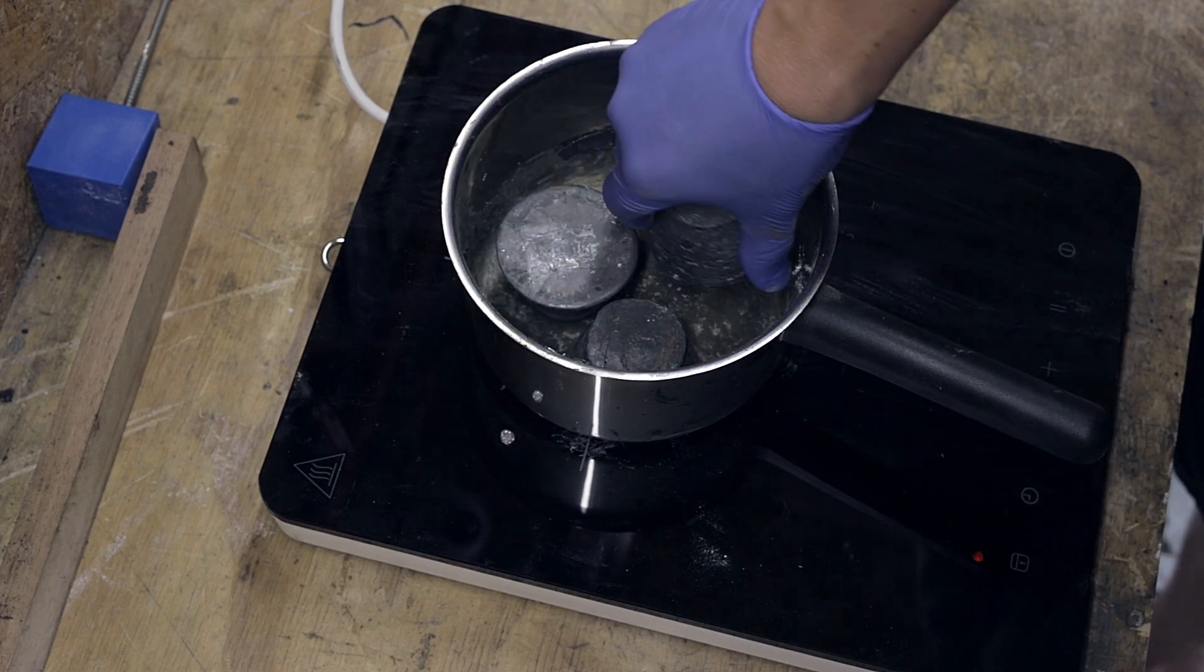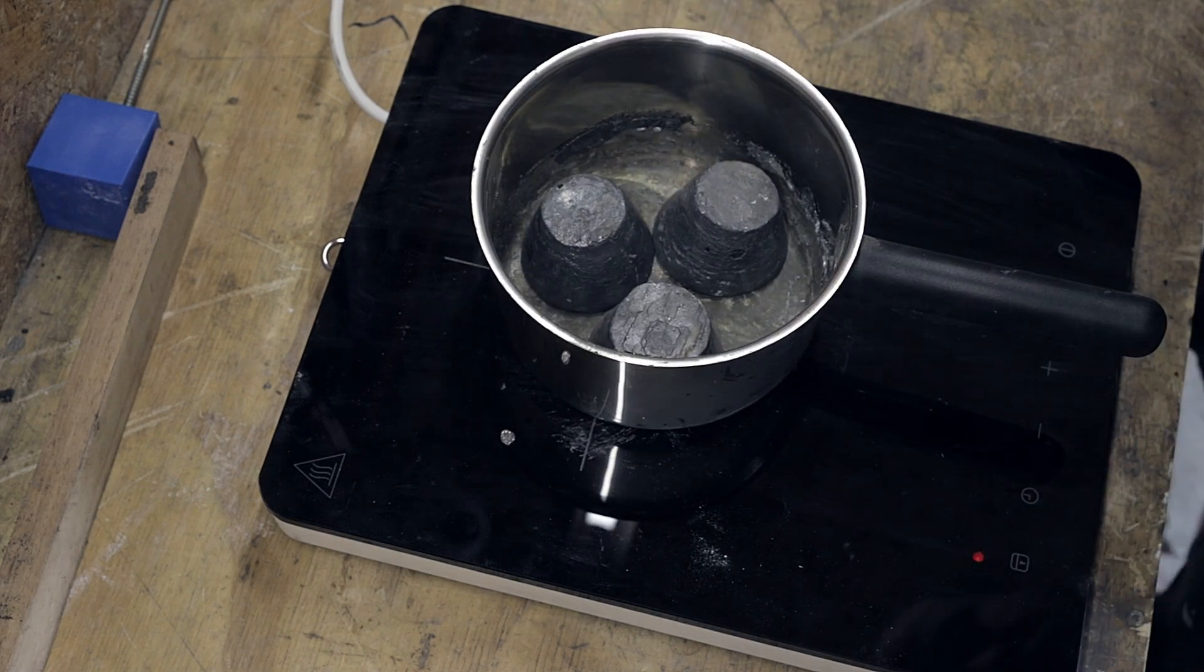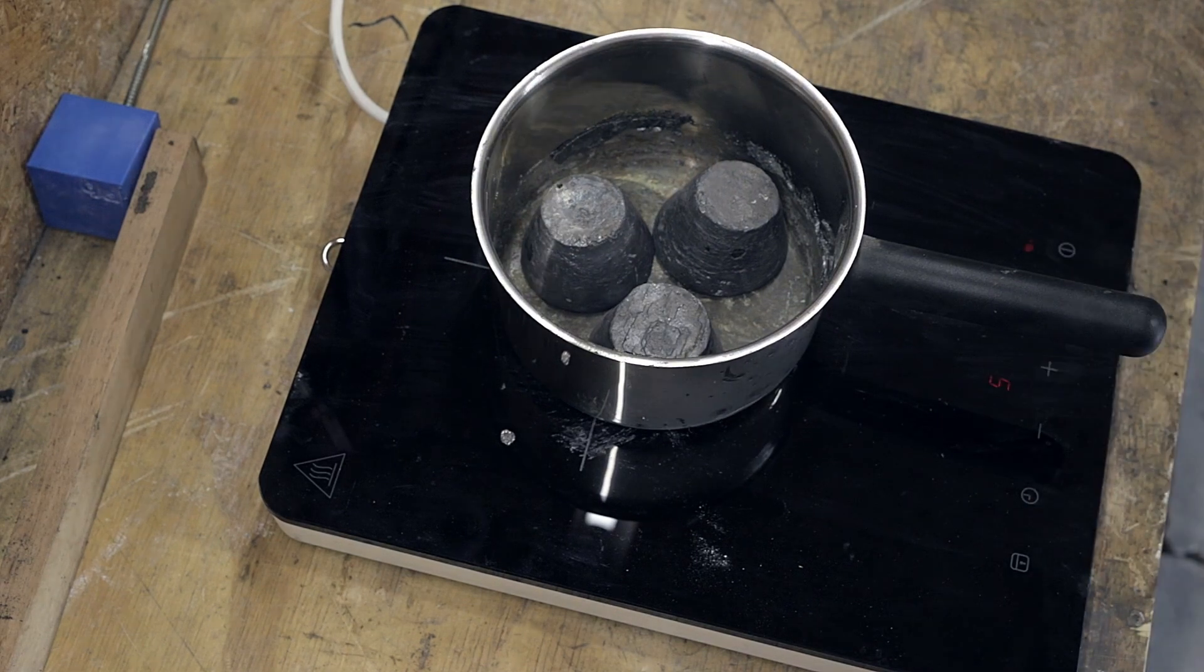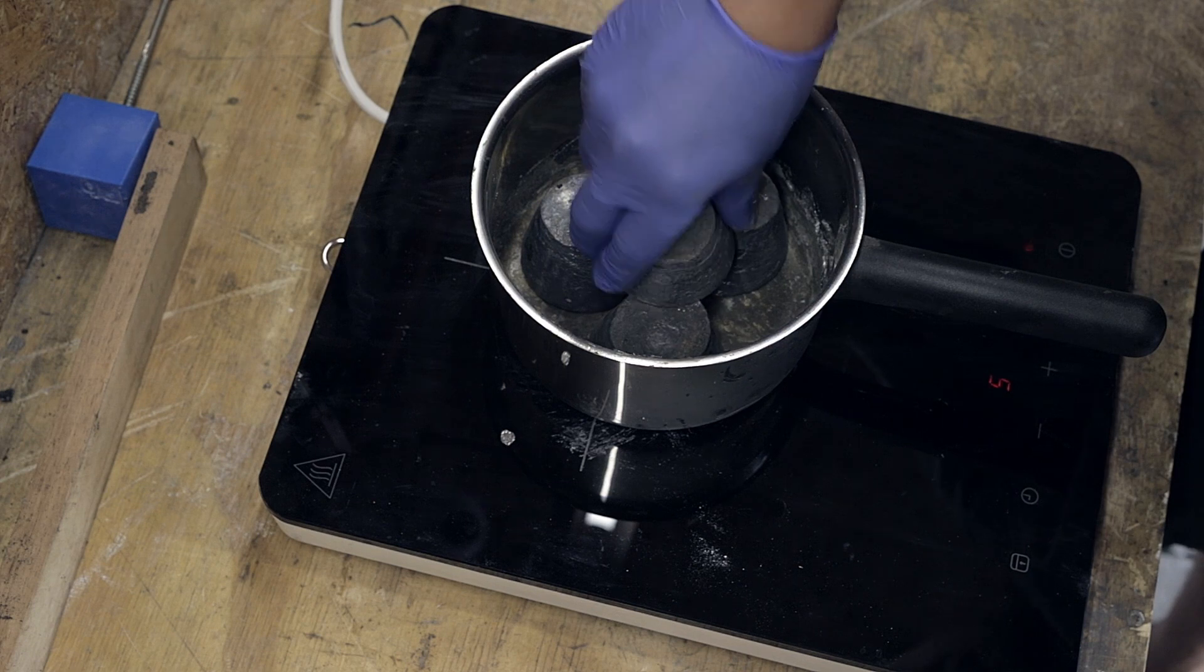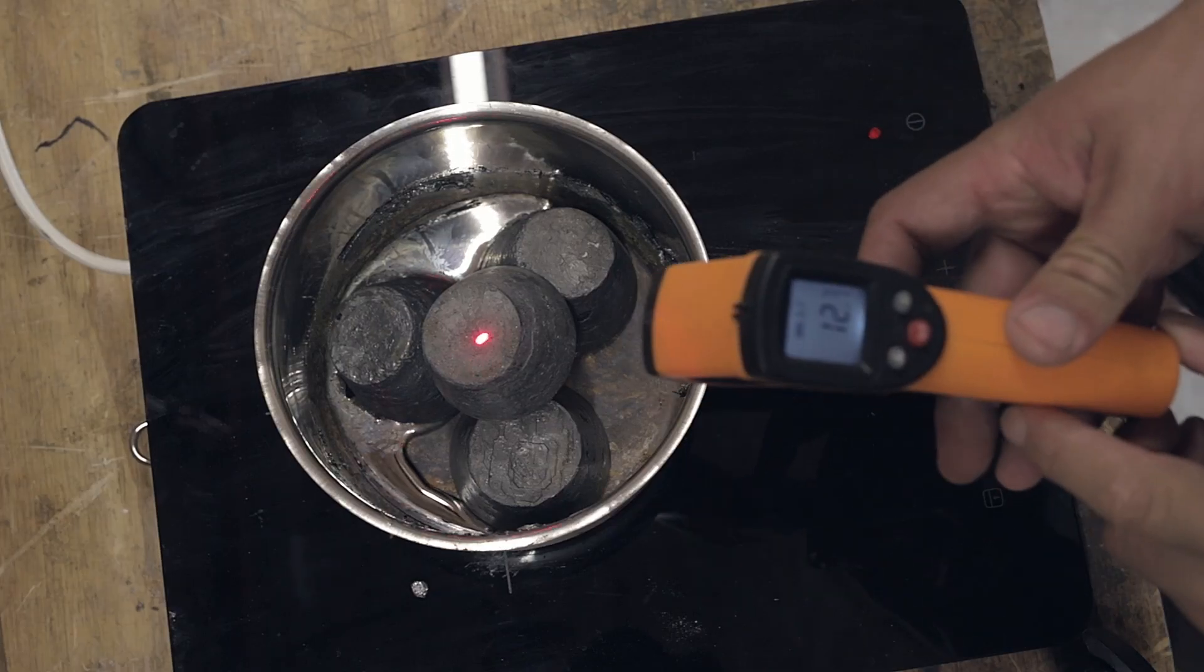The lead ingots are added and the stove set to medium heat. This should be done in a well-ventilated area and care must be taken to not reach 500 degrees C as lead fumes will start to be released at this temperature.